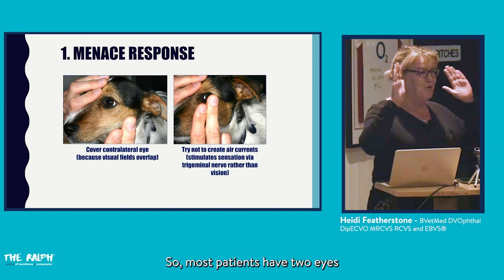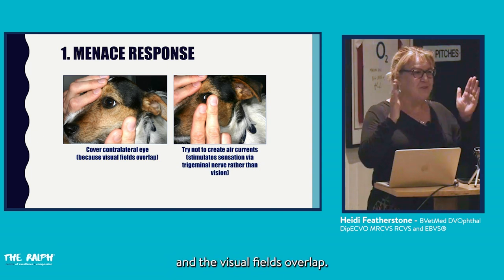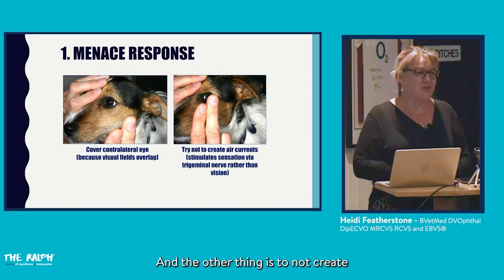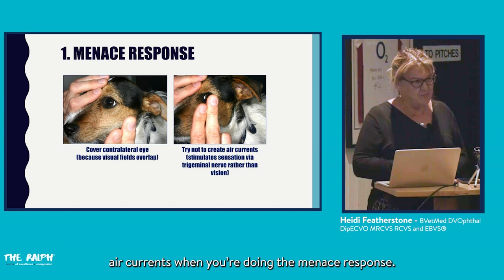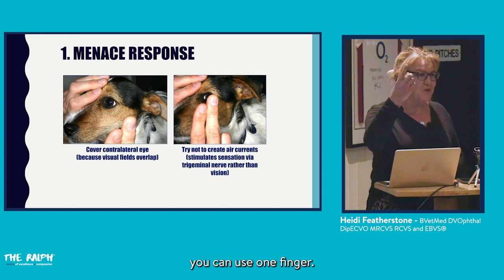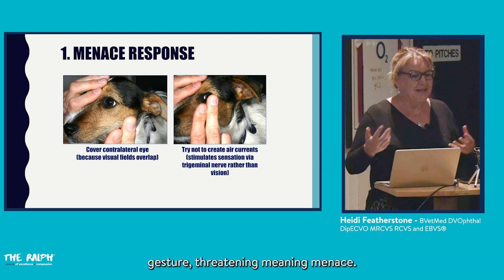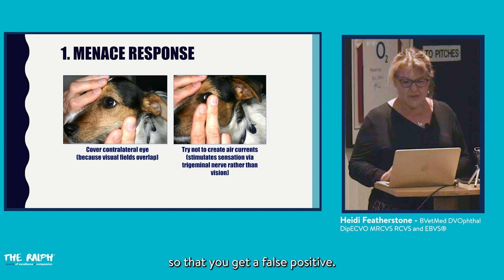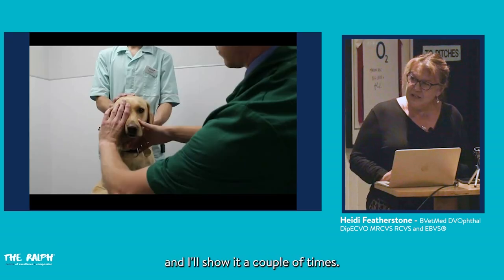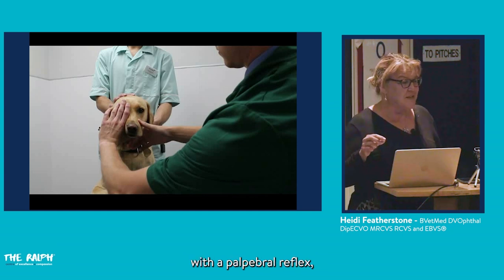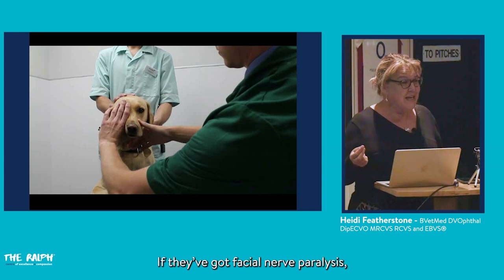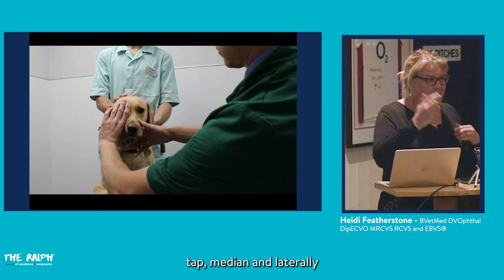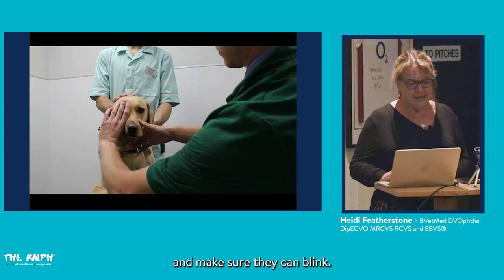Also, do not create air currents when doing the menace response — you can use your whole hand or one finger for a quick threatening gesture, but try not to stimulate sensation around the eye and cause a false positive. The endpoint is a blink. If the patient has facial nerve paralysis they won't blink and you'll get a false positive, so always quickly test the palpebral reflex first to confirm they can blink.